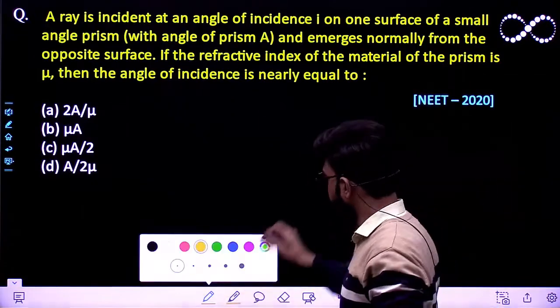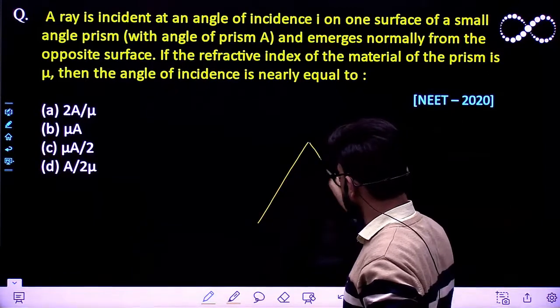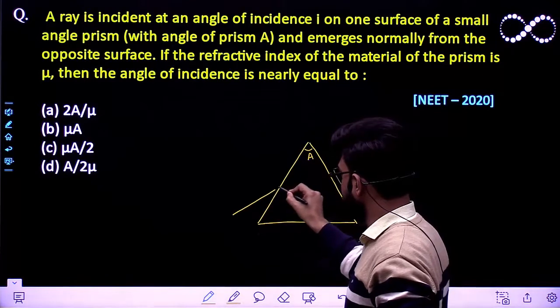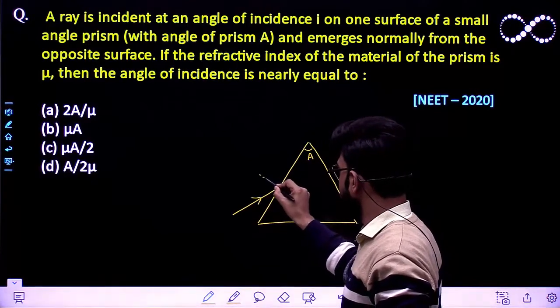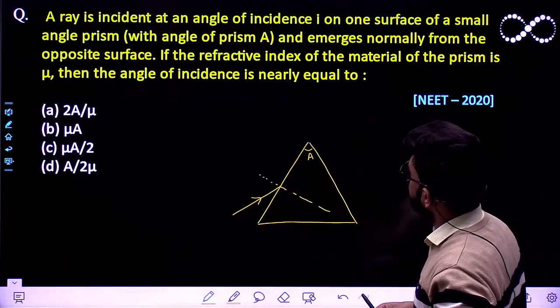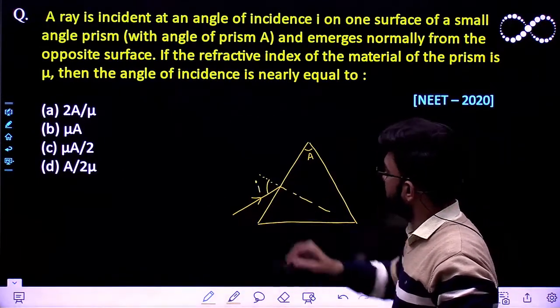So you have been given a prism in which this angle of prism is very small. An incident light comes and hits the surface, and this angle of incidence is I which is given to you.